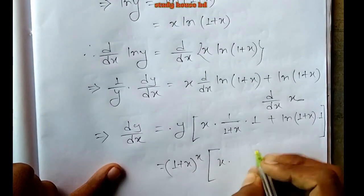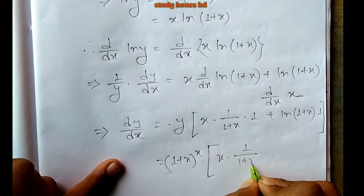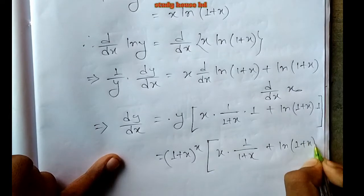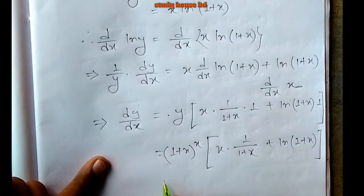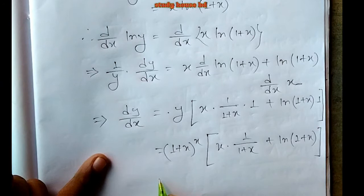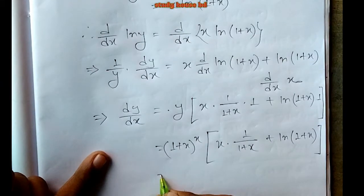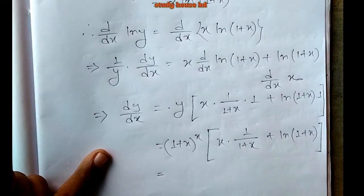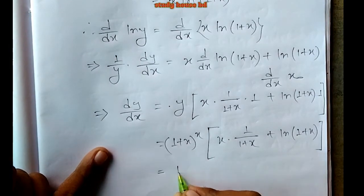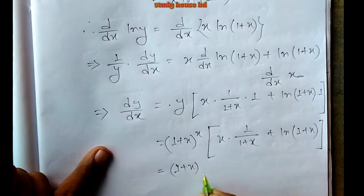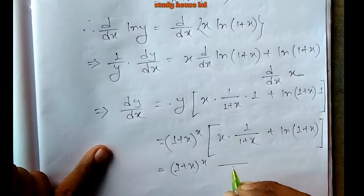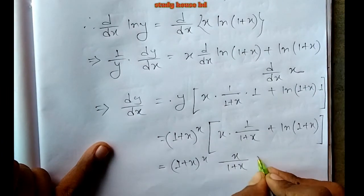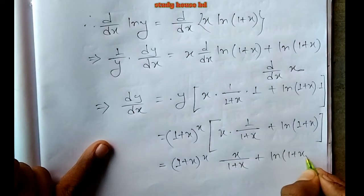Continuing the product rule: 2 times ln(1 plus x squared) plus 2x times 2x over (1 plus x squared). So we have 2 ln(1 plus x squared) plus 4x squared over (1 plus x squared).